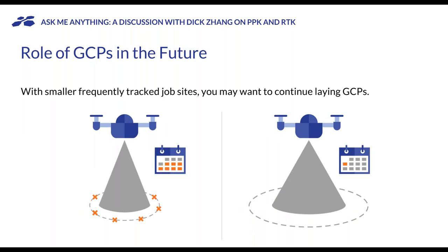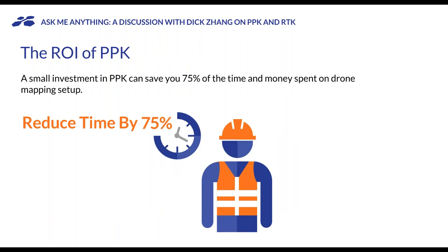Even with PPK, GCPs are not completely irrelevant. If you're mapping very small job sites over a long period of time, laying GCPs once makes sense — the time cost spreads out over years of data collection. But the more you're doing one-offs or areas tracked once a month, once a quarter, or once a year, you'll see dramatic time savings using PPK. You may still need some GCPs depending on accuracy requirements, but you can cut down from 10 or 8 down to often just one GCP — way less time, much easier to manage.